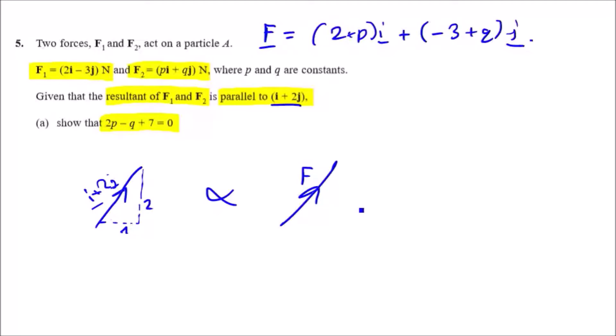To write this as an equation, you can literally write that F is some scale factor of i plus 2j. We usually replace this alpha sign with an equals k because k is used as a scale factor. So the force F equals some scale factor of i plus 2j.